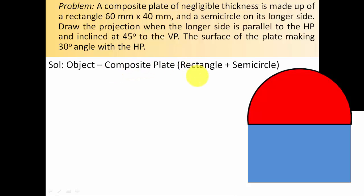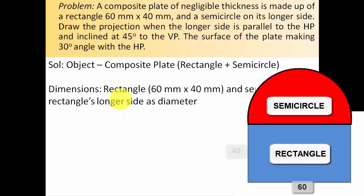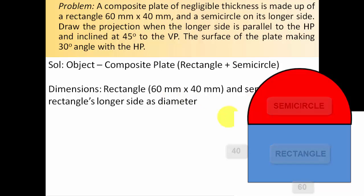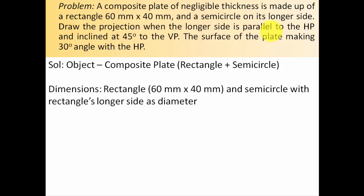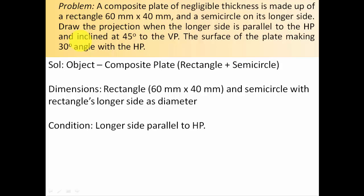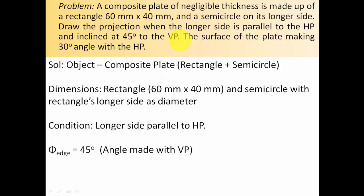The object is a composite plate — a combination of rectangle and semicircle. The rectangle dimensions are 60 by 40 mm. The semicircle is on the longer side, which is 60 mm, so that 60 mm acts as the diameter for the semicircle. The longer side is parallel to the HP, so we can assume it lies entirely on the HP. Apart from being parallel, it is also inclined at 45 degrees to the VP, denoted as phi, so phi is 45 degrees.